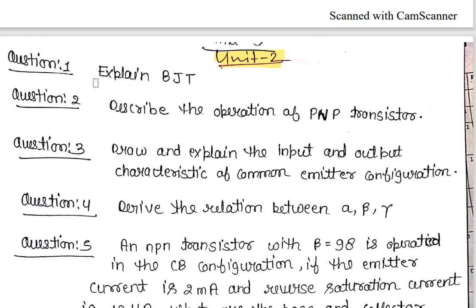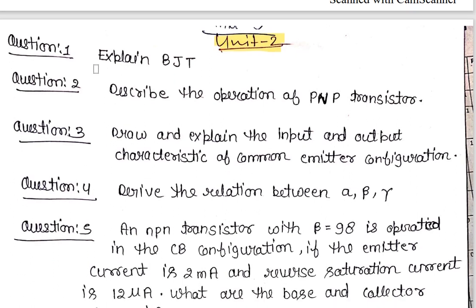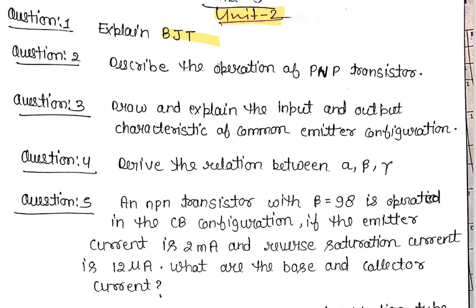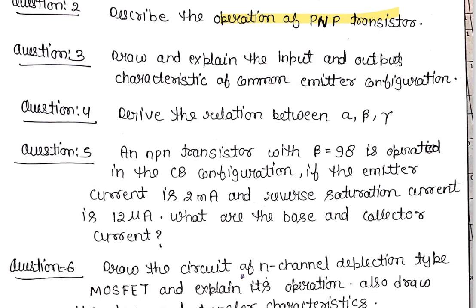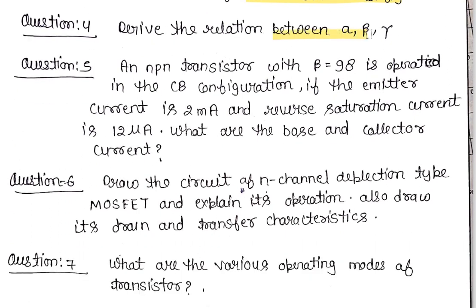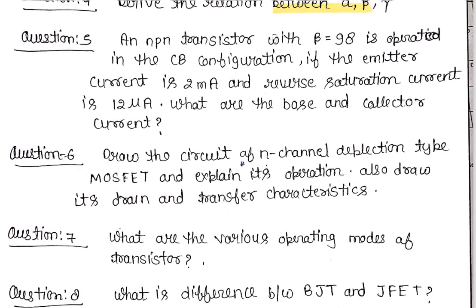Moving to Unit number two, which is based on BJT — Bipolar Junction Transistor. First question: study BJT basics. After that, study operation of PNP transistor, input-output characteristics, and common emitter configuration. Also study the relationship between alpha, beta, and gamma.